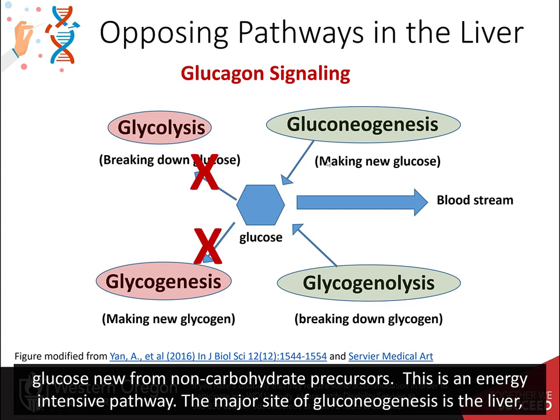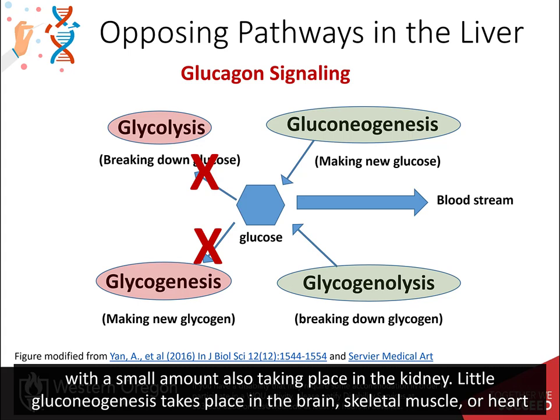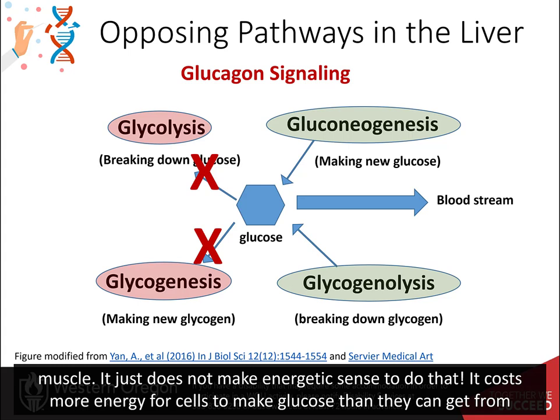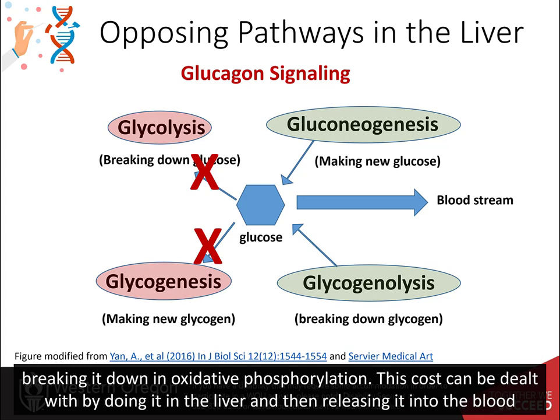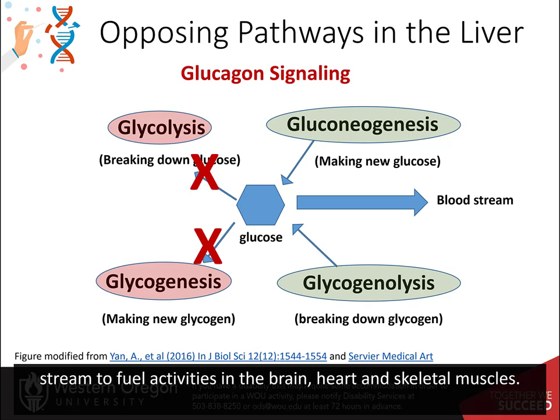Gluconeogenesis is an energy-intensive pathway. The major site for gluconeogenesis is the liver, with a small amount also taking place in the kidney. Little gluconeogenesis takes place in the brain, skeletal muscle, or heart muscle. It just does not make energetic sense to do that — it costs more energy for cells to make glucose than they can get from breaking it down in oxidative phosphorylation. This cost can be dealt with by doing it in the liver and then releasing it into the bloodstream to fuel activities in the brain, heart, and skeletal muscle.